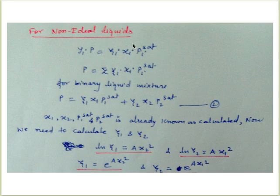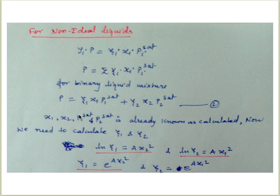For non-ideal liquid, we use the modified Raoult's Law equation: P = sigma(gamma_i * x_i * P_i_sat). For a binary liquid mixture, this becomes an equation with x1, x2, gamma1, gamma2, P1_sat, and P2_sat. The P1_sat and P2_sat values are the same as already calculated for the ideal liquid case.